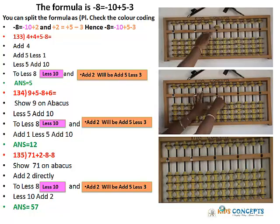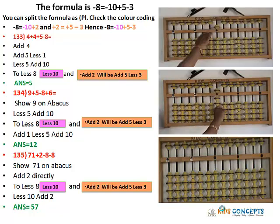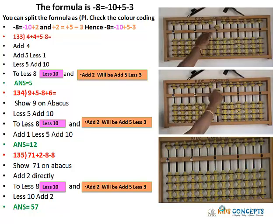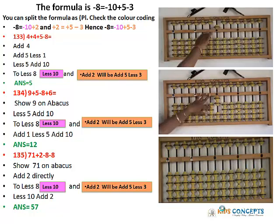Let's try this again. 9. Add 5 is Less 5, Add 10. Less 8 is Less 10, Add 5, Less 3. Now add 6 — Add 6 will be equal to Add 1, Less 5, Add 10. Answer is 12.